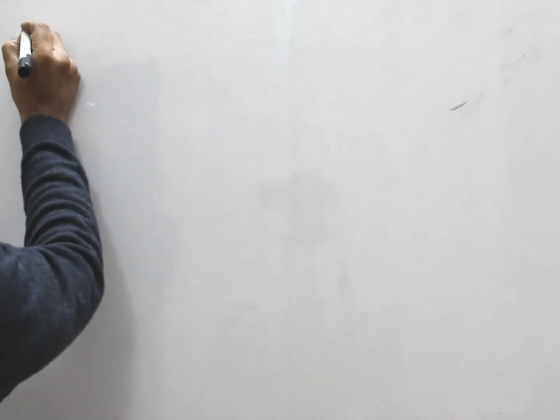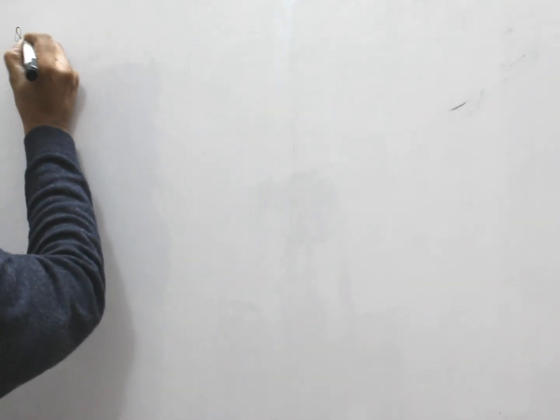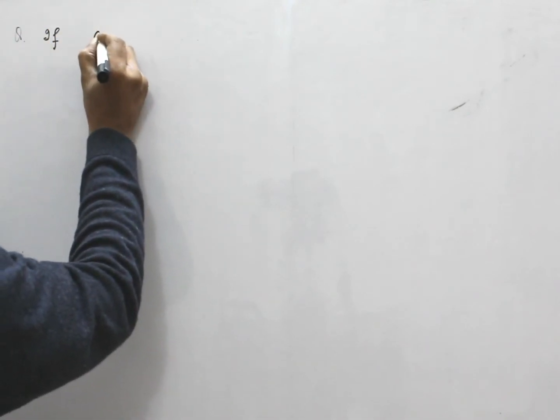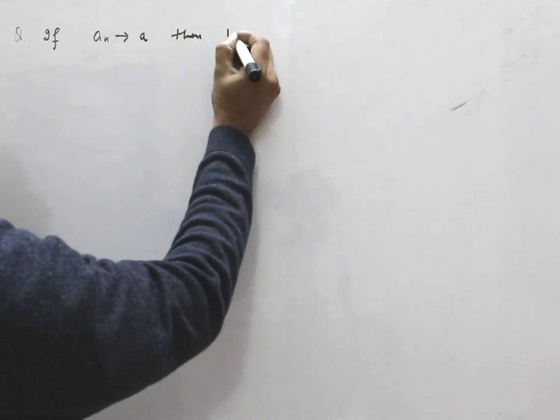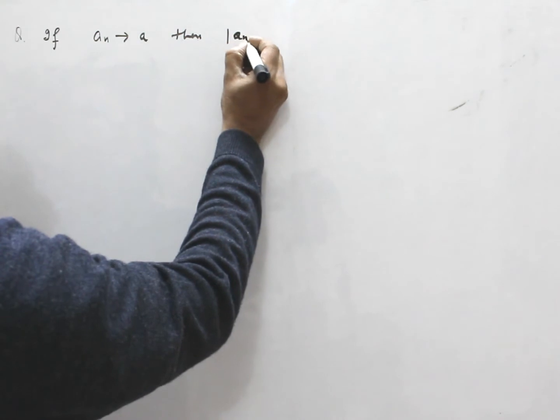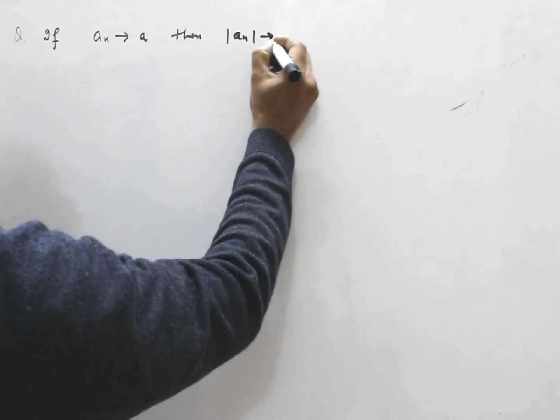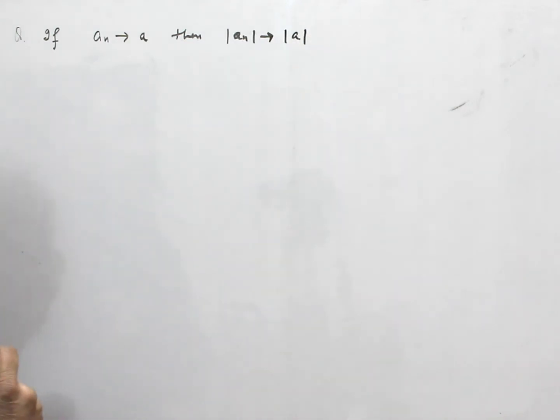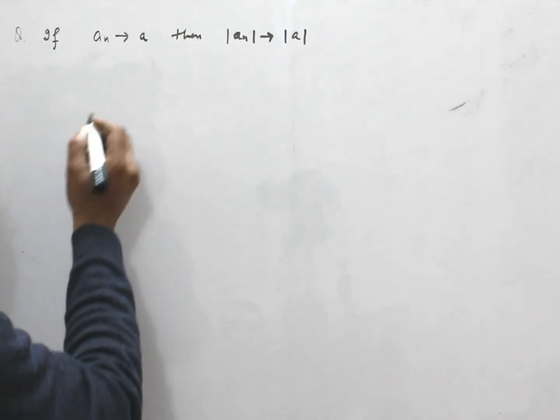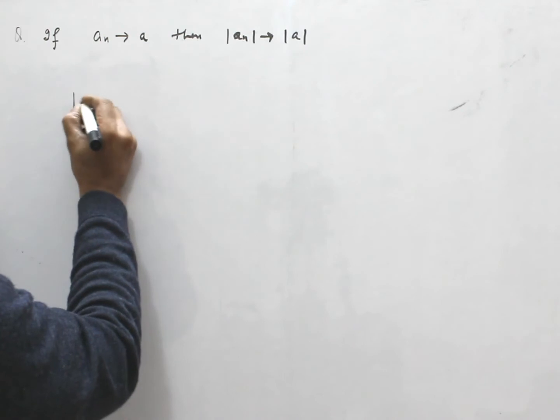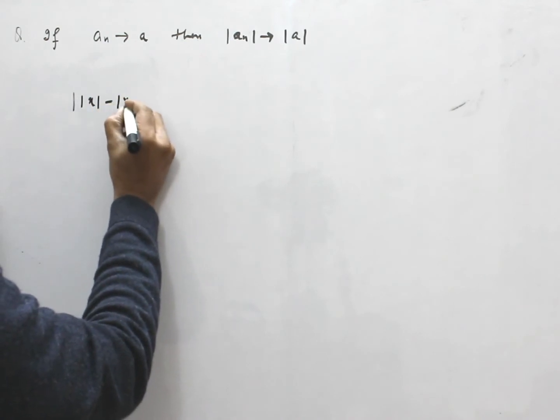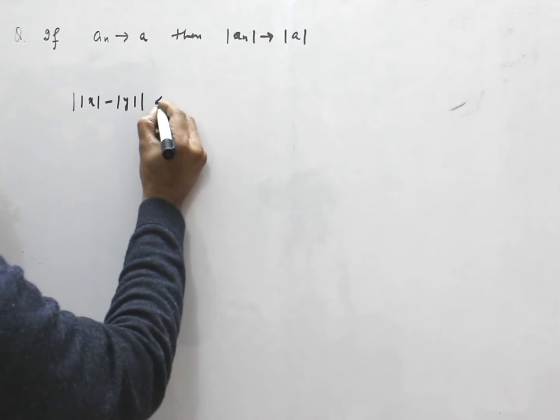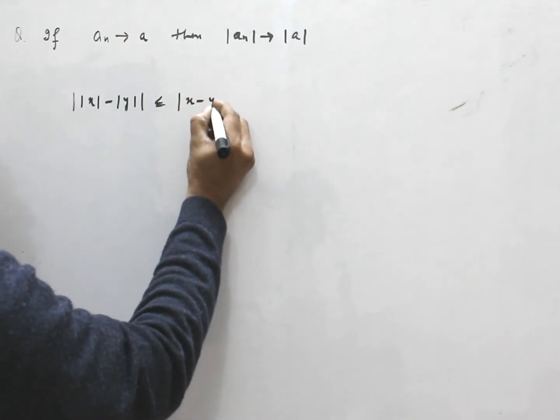So, if our question is, if AN converts to A, then norm of AN converts to norm of A. To prove this result, we need to prove a result that mod of x minus mod of y less than or equal to mod of x minus y.